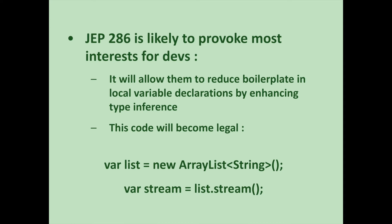The change that is likely to provoke the most interest is JEP 286, which will allow the developer to reduce boilerplate in local variable declarations by enhancing type inference. This means that the code appearing on your screen becomes legal Java as of the next release. This syntax will be restricted to local variables with initializers and local variables in for loops. It is purely syntactic sugar implemented in the source code compiler and has no semantic significance. Nevertheless, experience shows that this feature is likely to provoke lively debate among Java developers.